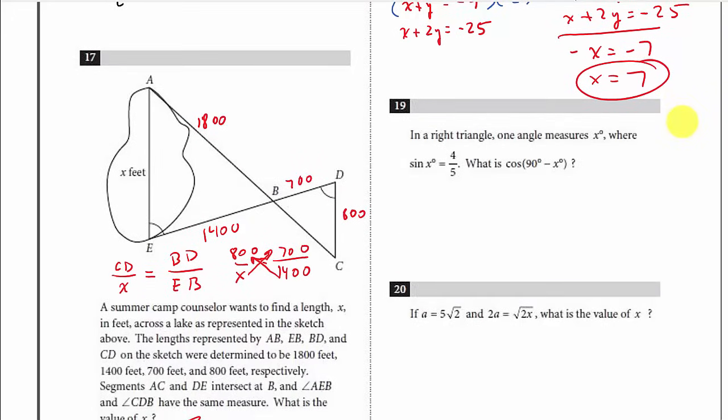In a right triangle, one angle measures X degrees where the sine of X degrees is 4/5. What is the cosine of (90 minus X) degrees? That's easy — it's 4/5. Remember your co-functions: sine of X equals cosine of (90 minus X). They're the same.